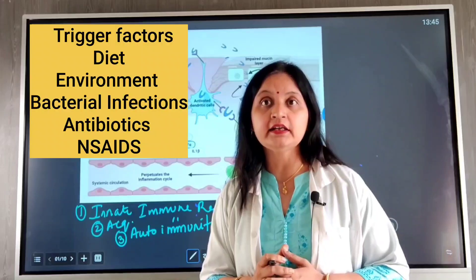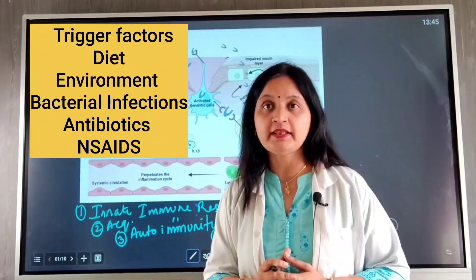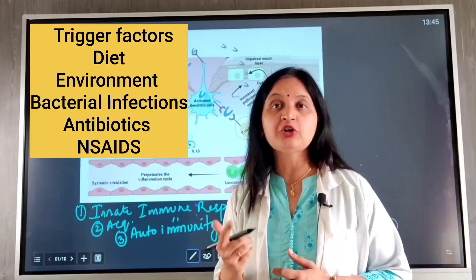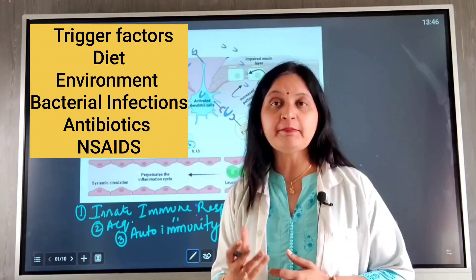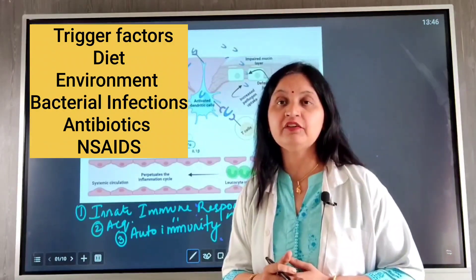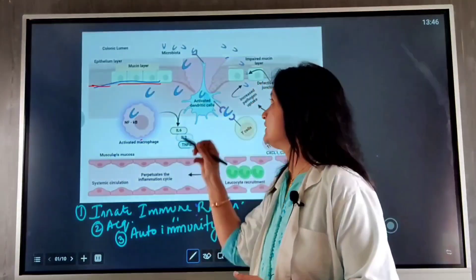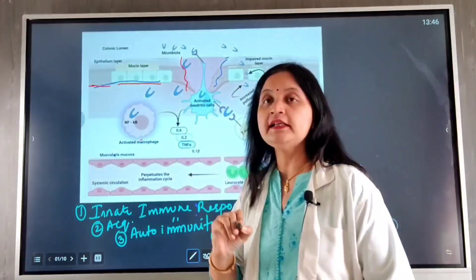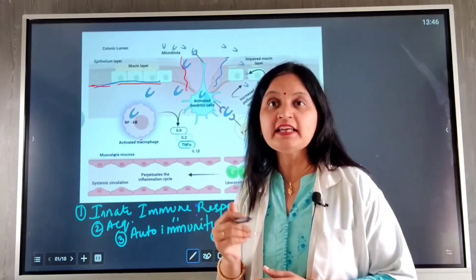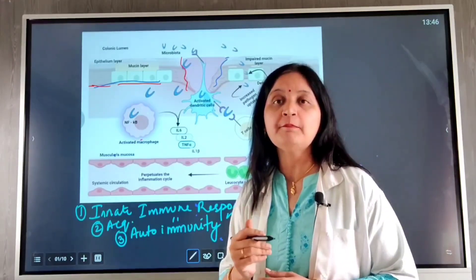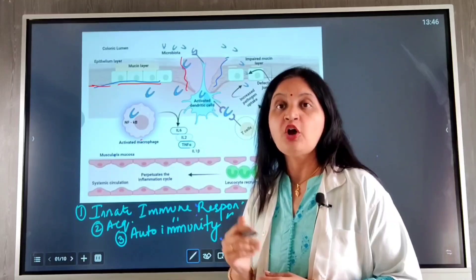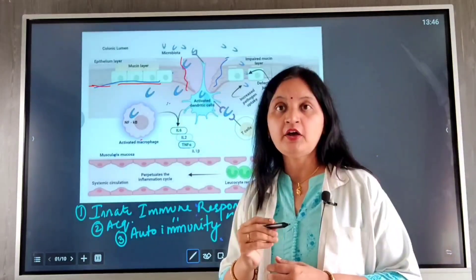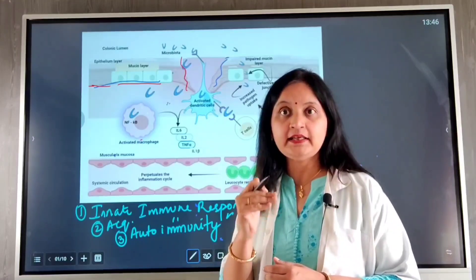Certain factors trigger damage to the epithelial layer, including environment, diet, chronic bacterial infections, certain antibiotics, and non-steroidal anti-inflammatory drugs. When the epithelial layer is damaged, there is increased permeability to bacterial antigens and toxins, which cross the epithelial layer and reach the lamina propria lying beneath.